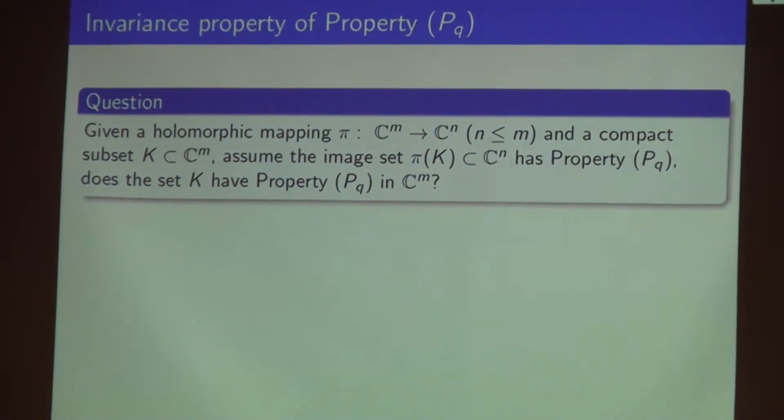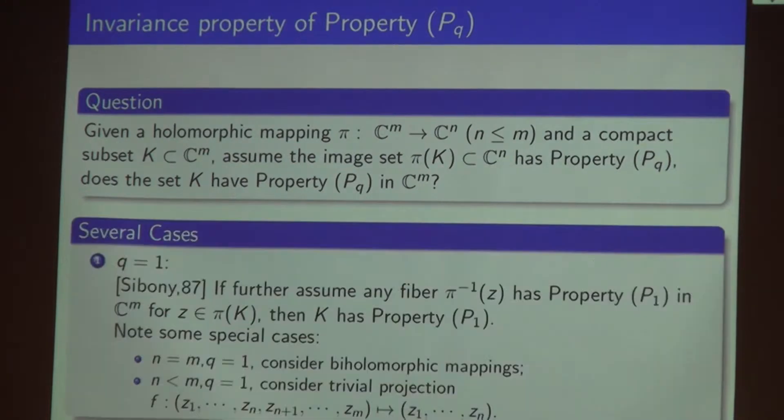Here's our question to study the invariance property of property P_Q. Given a holomorphic mapping pi from C^m to C^n, and I assume that m is greater than or equal to n, and a compact subset K in C^m, let's assume the image set pi(K) in C^n has property P_Q. Does the original set K have property P_Q in C^m or not?